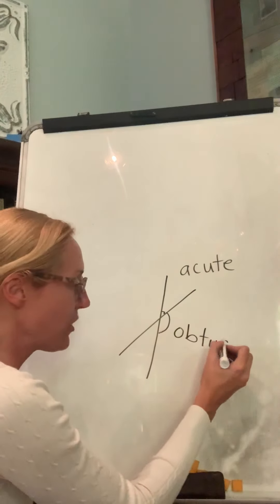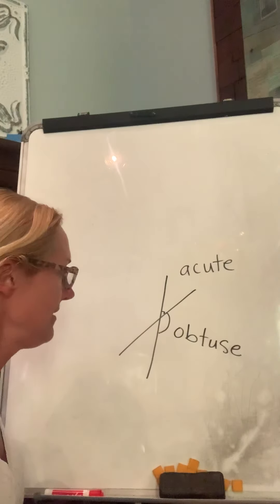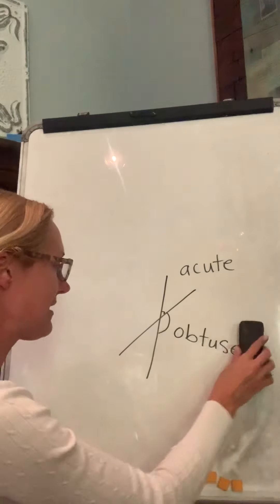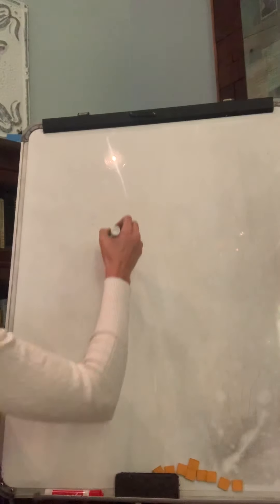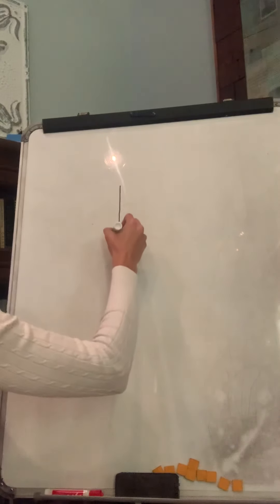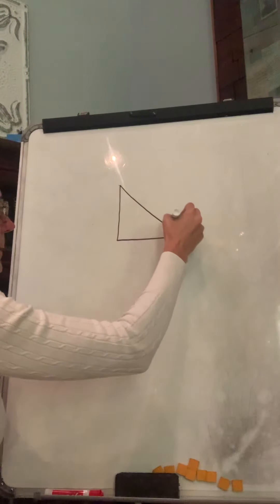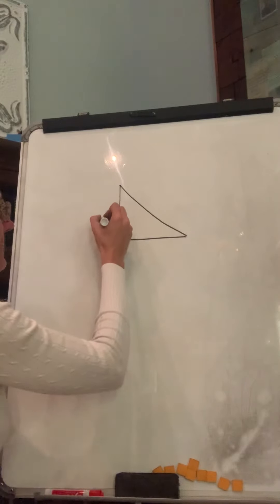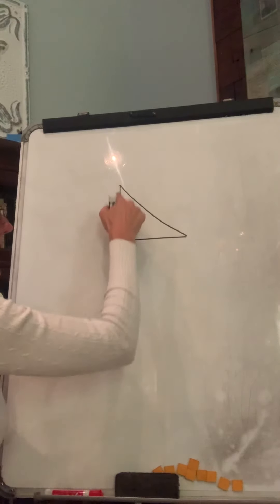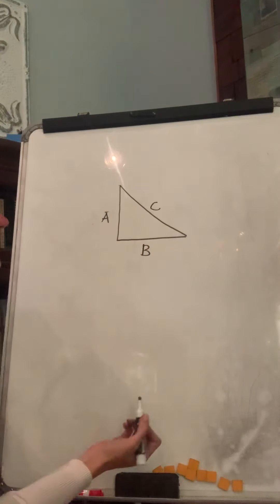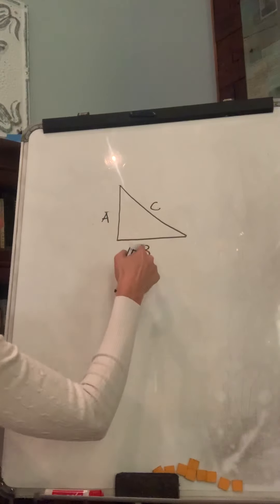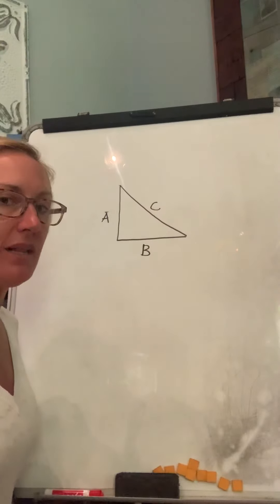Let's look at some shapes. I'm going to put some up here and ask you questions. Write down your answers on your whiteboard or a piece of paper to put on Seesaw. Here's a triangle — this is line A right here, line segment B from here to here, and this is C. Which two lines are perpendicular to each other?